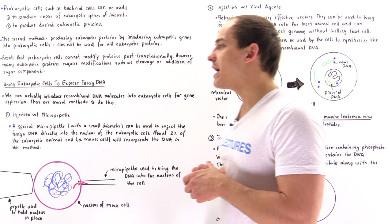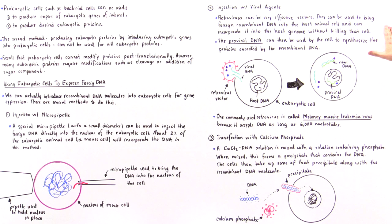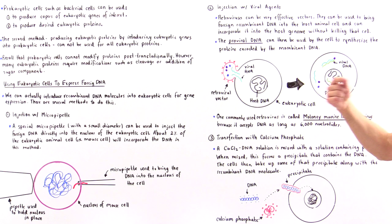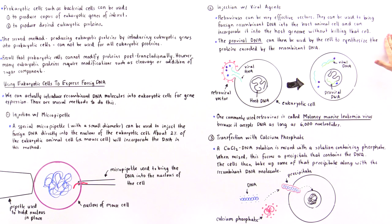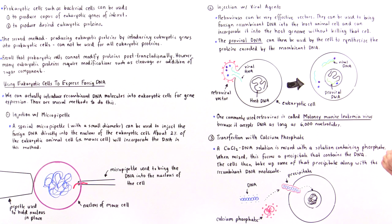The great thing about retroviruses is that most of the time they don't actually kill the cell, at least not immediately. So retroviruses can be very effective vectors — they can bring recombinant DNA molecules into the host animal cell and incorporate that viral DNA into the host genome without killing the cell. Once incorporated, that DNA is known as proviral DNA, and the cell can use the proviral DNA to synthesize the protein encoded by the viral DNA molecule we injected.